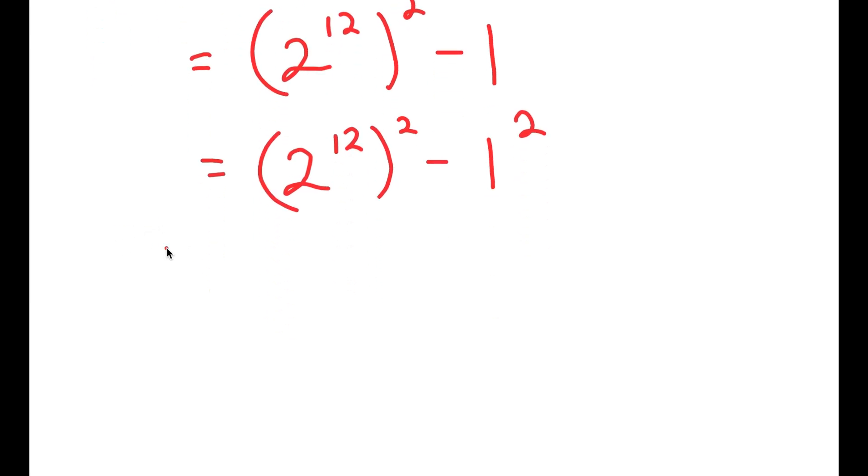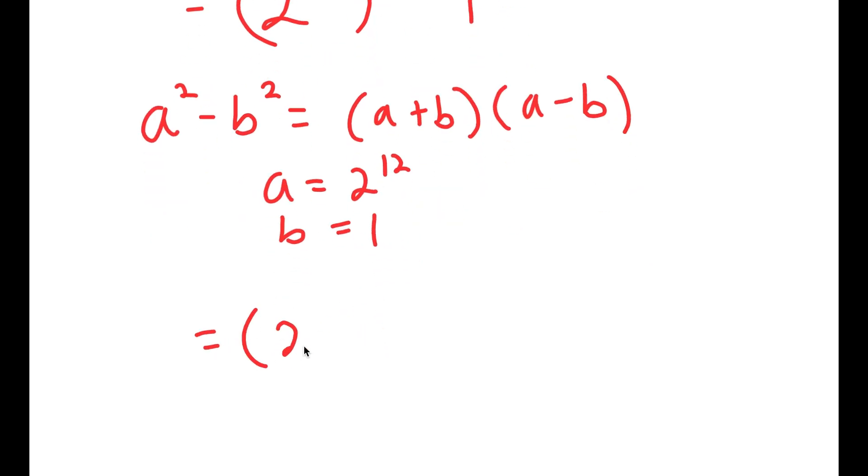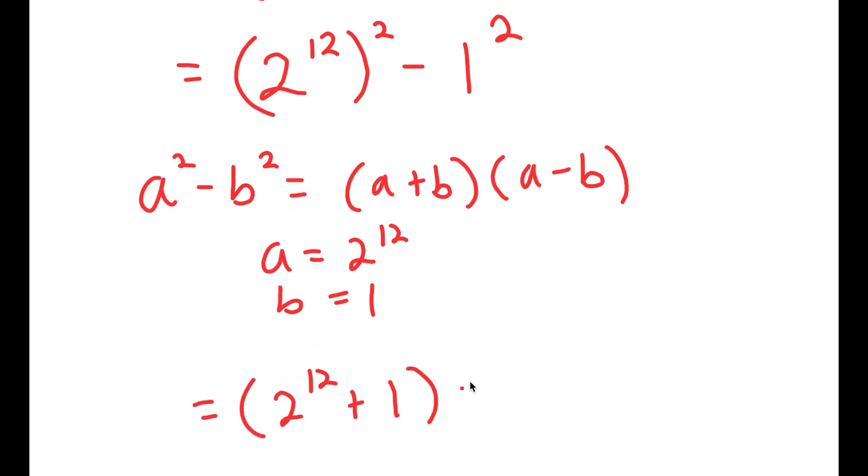And now I can use the property that states if I have something in the form a squared minus b squared, this is equal to a plus b times a minus b. So in this case, a is 2 to the power of 12 and b is 1. So I get 2 to the power of 12 plus 1 times 2 to the power of 12 minus 1.